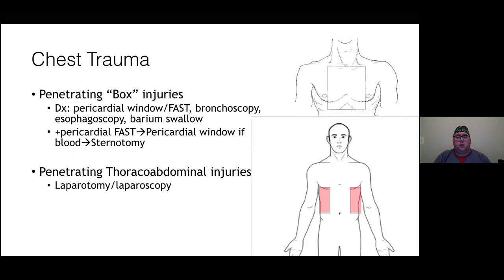Box injuries: know the borders of the box — clavicles falling down in line with the nipple to the xiphoid. For injuries in this area, perform a FAST exam. If positive, do a pericardial window, and if there's blood, take the patient to the OR for sternotomy.